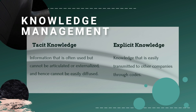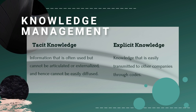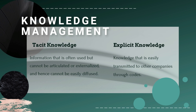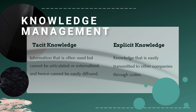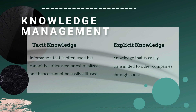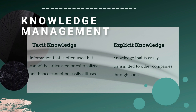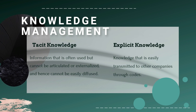There are two types of knowledge management: tacit and explicit. Tacit knowledge is information that is often used but cannot be externalized and cannot be easily diffused. Explicit knowledge is knowledge that is easily transmitted to other companies.